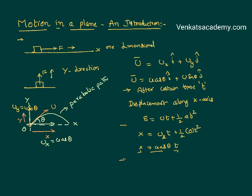Similarly, along the y-axis I can calculate: y = uy·t + ½·(acceleration)·t². The body is trying to move in the upward direction whereas acceleration due to gravity acts in the downward direction, so it is negative. Therefore y = u sin θ · t − ½g t².